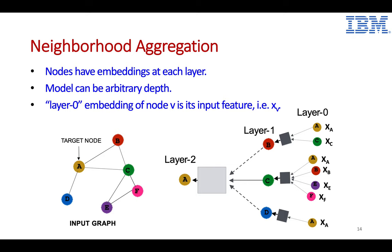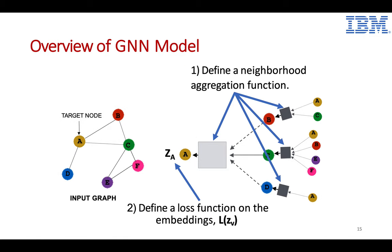The model itself can be of arbitrary depth, but in reality it's not that deep because of overfitting. Here is an overview of the GNN model. The most important part is how to define a neighborhood aggregation function that effectively aggregates neighborhood information to capture it for the current target node. Once we have embeddings, based on the problem — for example, node classification — we define a loss to quantify accuracy. We use batch training to learn, and finally generate the embeddings as needed.